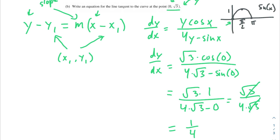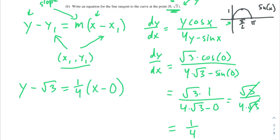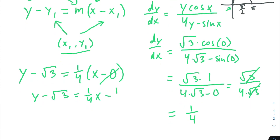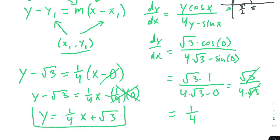That's part of the information we need for our point-slope form — we also need the point, and we were given (0, √3). So plugging everything in: y minus square root of 3 equals 1/4 times x minus 0. Simplifying, since x minus 0 is just x, we get y equals 1/4 x plus square root of 3 as our final answer for the equation of the line tangent to the curve.